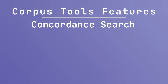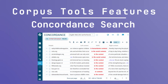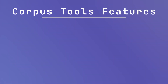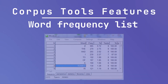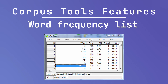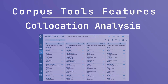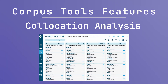Concordance search enables searching for specific words or phrases within the corpus to observe their usage in various contexts. Word frequency is a method of generating lists of the most frequently used words or phrases in the corpus, which helps understand common language patterns. Collocation analysis identifies common collocations — words that frequently appear together — providing insights into natural language usage.